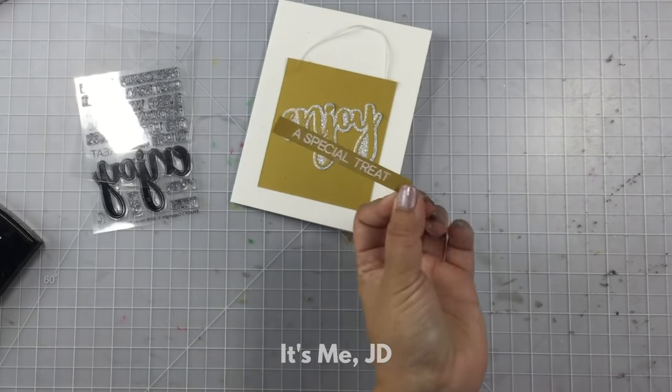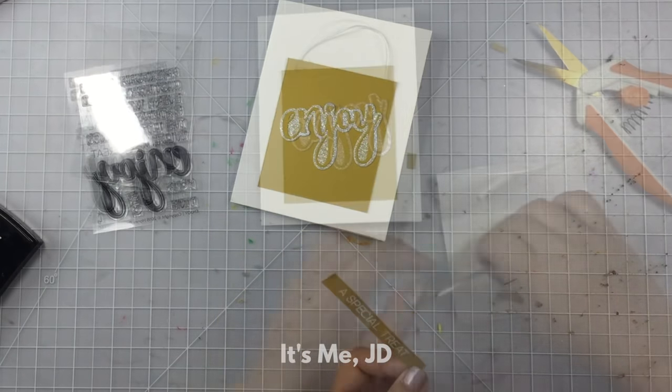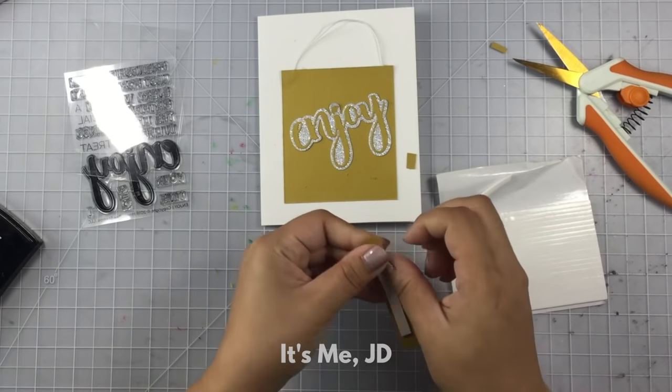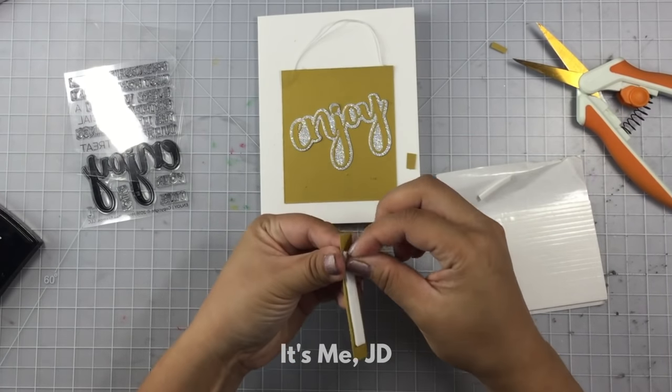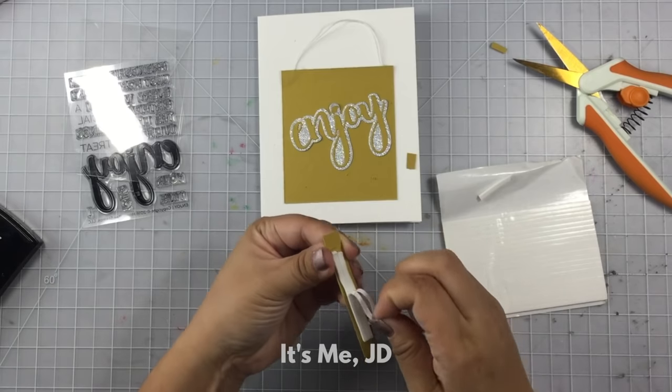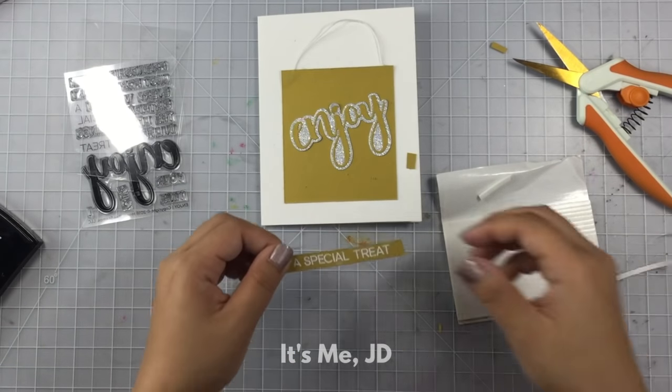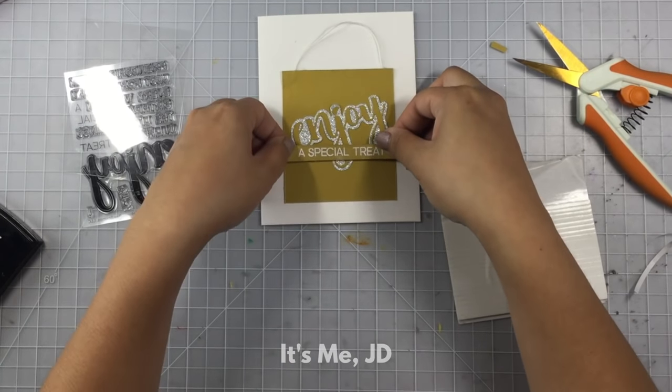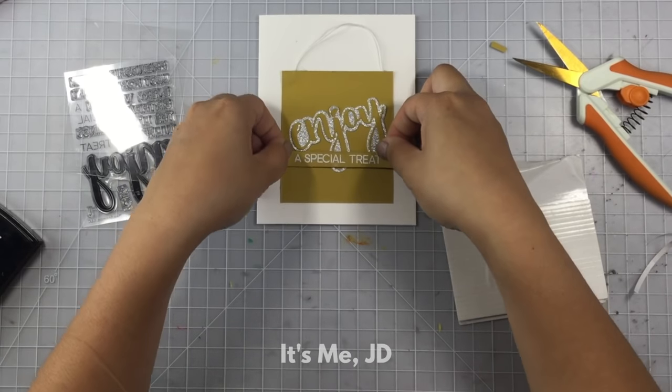I just love the nice crisp image you get when you heat emboss a stamped image. Alrighty, I'll pop some foam tape on the back of this sentiment strip and peel off the backing. And I'll stick this right onto my shopping bag and this card is pretty much finished.